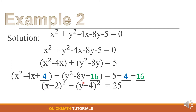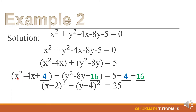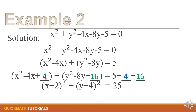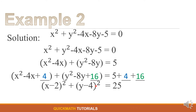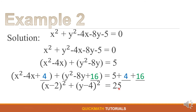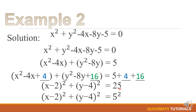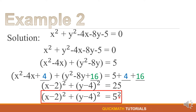For our third step we will factor x and y. Get the square root of x² which is x, copy the sign of the middle term — negative — and the square root of 4 is 2, then put a square. Plus, the square root of y² is y, copy the sign of the middle term — negative — and the square root of 16 is 4, then put a square. This equals 5 + 4 + 16 = 25, and 25 can also be expressed as 5². Therefore the standard form is (x - 2)² + (y - 4)² = 5².